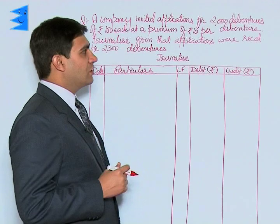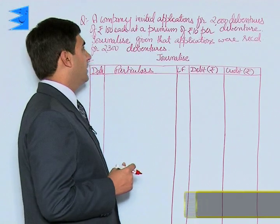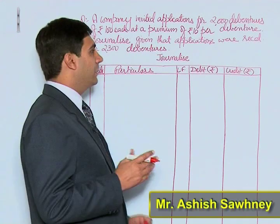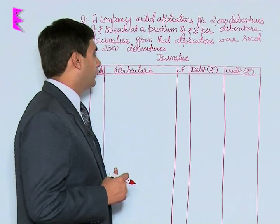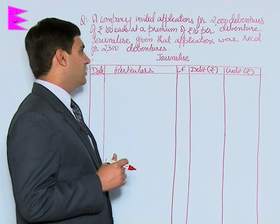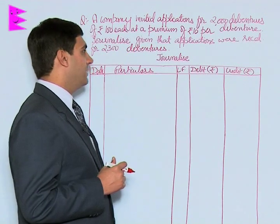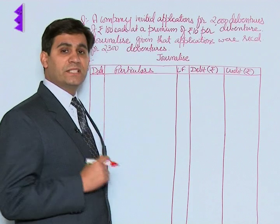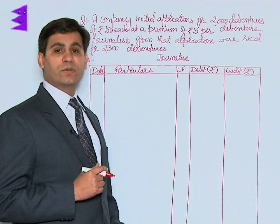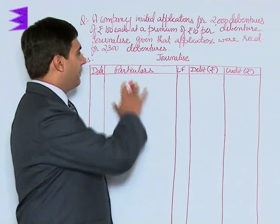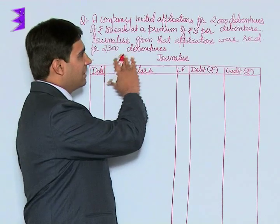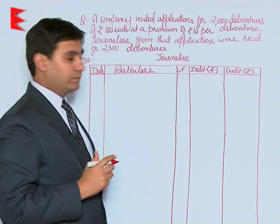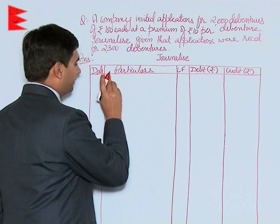A company invited applications for 2000 debentures of rupees 100 each at a premium of rupees 10 per debenture. Applications were received for 2300 debentures, so this is a case of over-subscription — the number of applications received is more than the debentures offered. The first entry would be: